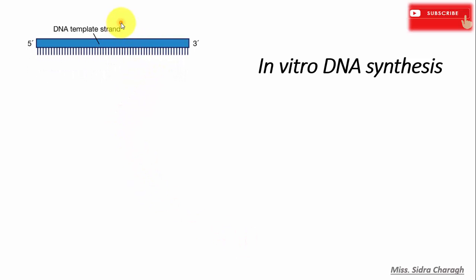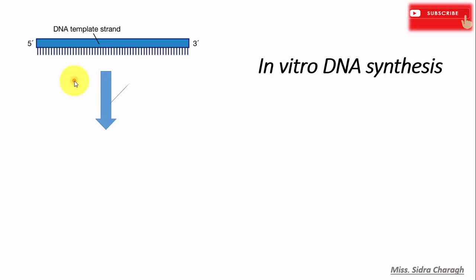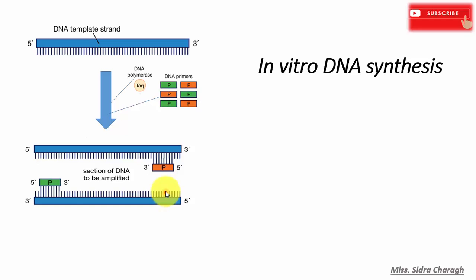First, we should have a DNA template strand, and this template strand will provide complementary bases for the synthesis of a new strand. Here is the three prime end of the template and this is the five prime end. Next we need DNA polymerase, oligonucleotide primers — the primer is a short oligonucleotide sequence complementary to the sequences at the three prime end of the template.